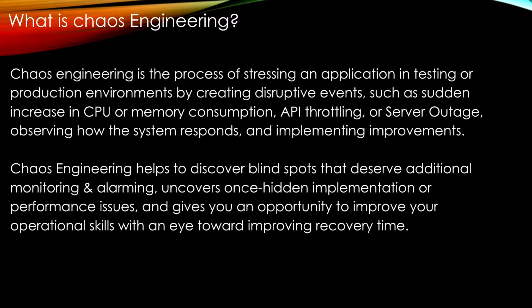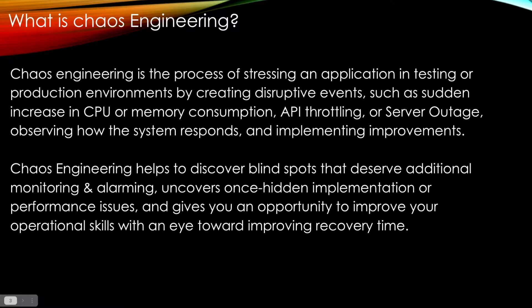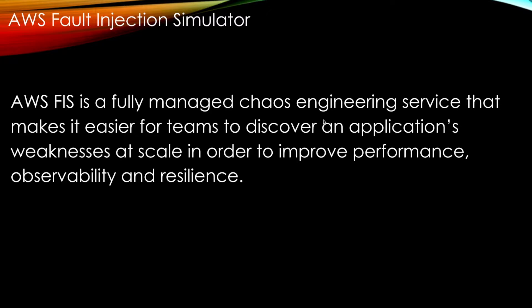Normally, whenever you try to do this, it's very difficult. In the real world, it's very challenging to perform chaos engineering manually. Fault Injection Simulator helps you perform all these things. It is a fully managed chaos engineering service — whatever you do in chaos engineering, you can now do from your AWS console. It's a managed service that makes it easier for a team to discover an application's weaknesses at scale in order to improve performance, observability, and efficiency.